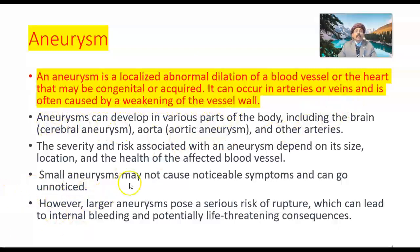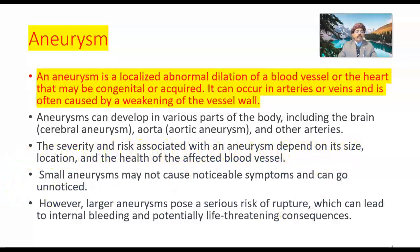Aneurysms can develop in various parts of the body including the brain — we call it cerebral aneurysm — in the large cerebral arteries, in the circle of Willis, small saccular berry aneurysms, or in the aorta giving an aortic aneurysm, and in any other arteries. The severity and risk associated with an aneurysm depends on its size, location, and the health of the affected blood vessel.